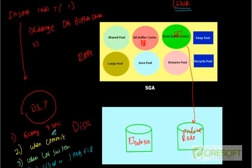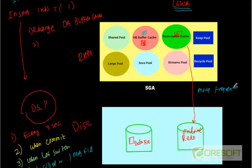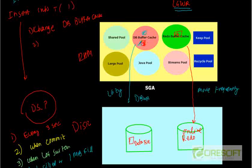The DB buffer cache is going to change, and then the redo buffer cache also changes. Then those redo buffer cache records are going to transfer to the online redo log file. One thing you need to notice is that LGWR is going to write more frequently than another process called DB writer. DB writer is going to write the buffer cache to the data files, but this is a lazy writer — it is not going to write as frequently as the log writer, and there is a good reason for that.